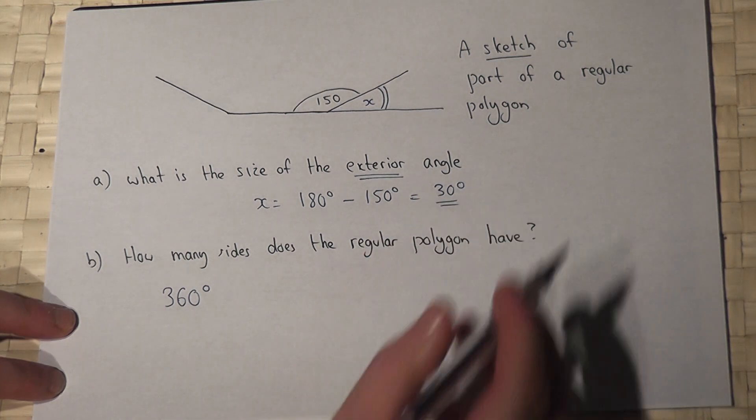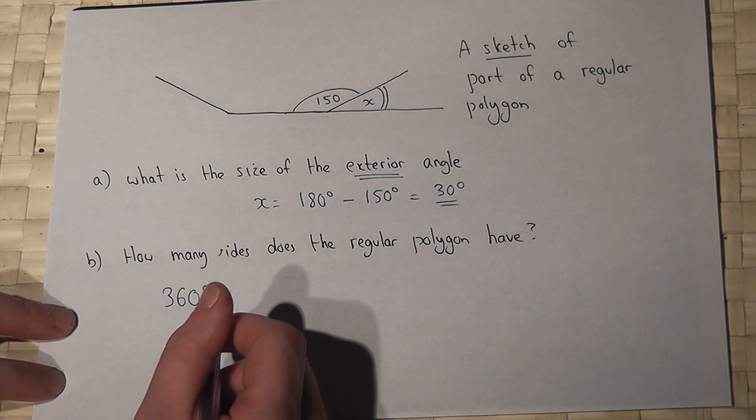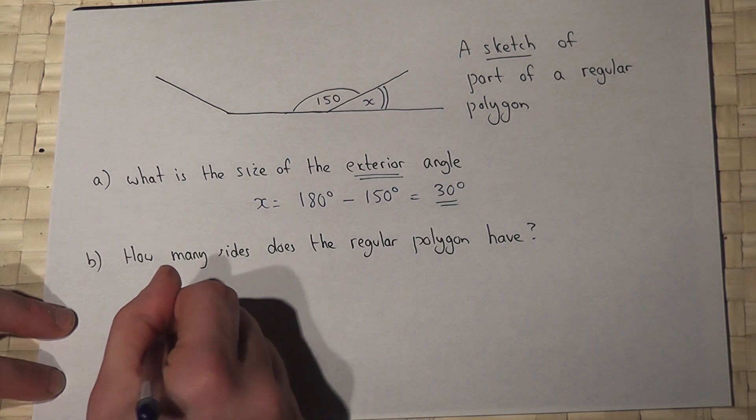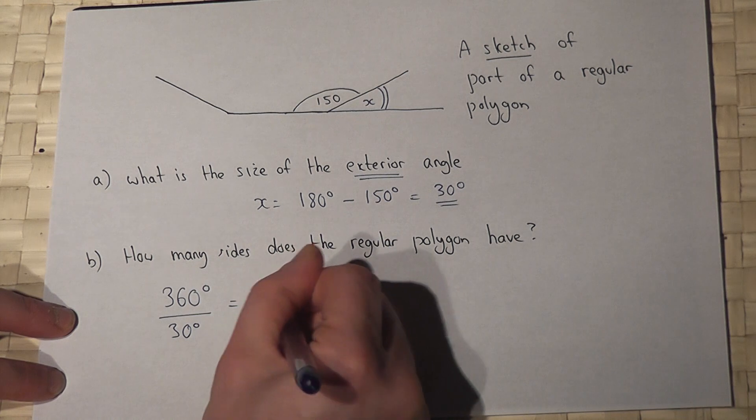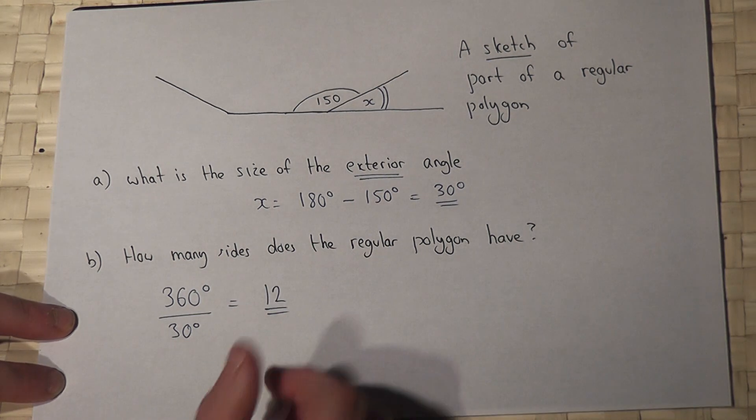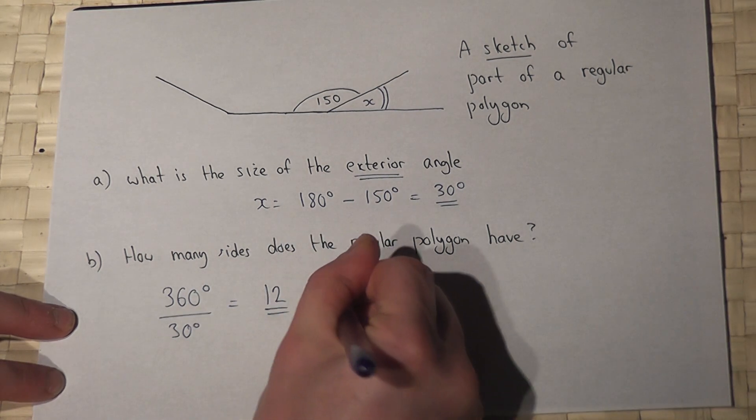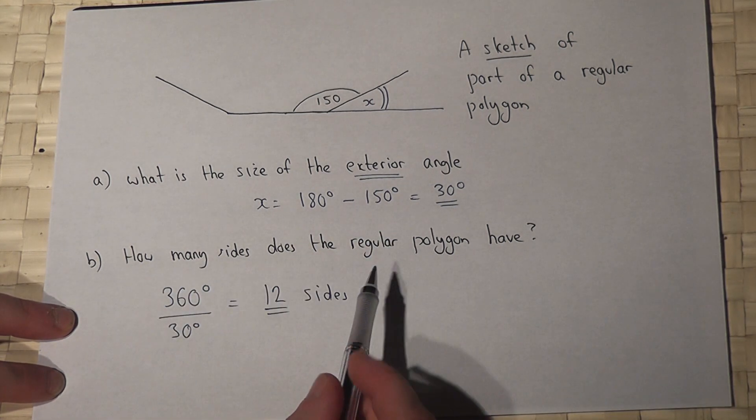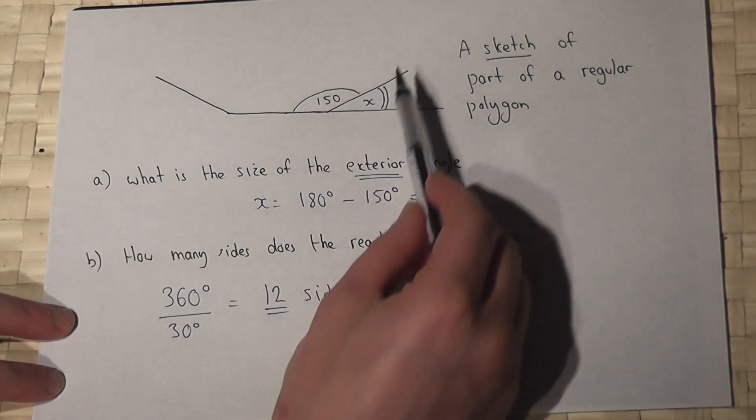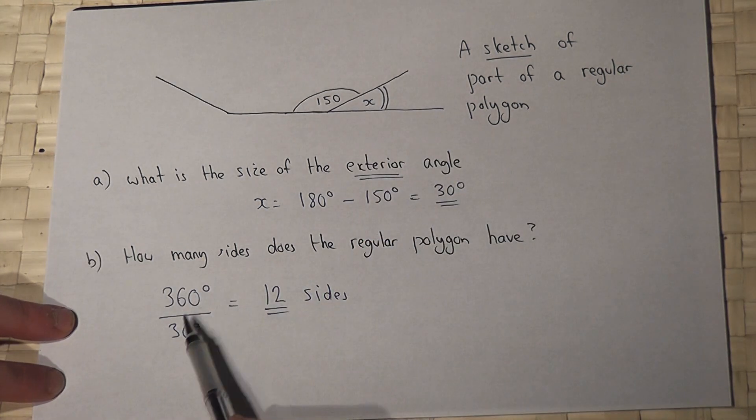Then the number of sides must be 360 divided by 30, which equals 12. Therefore this polygon has 12 sides. This only works if we know it's a regular polygon, so all the angles must be the same.